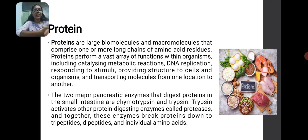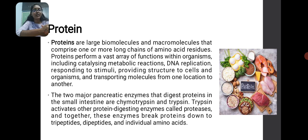Protein is another macronutrient. It is made up of one or more long chains of amino acids. It performs various functions in the human body, including catalyzing metabolic reactions, DNA replication, responding to stimuli and providing structure to cells and organisms. The two major pancreatic enzymes that digest protein in the small intestine are chymotrypsin and trypsin. These activate other protein-digesting enzymes like proteases, and together they break down protein into tripeptides, dipeptides and individual amino acids.